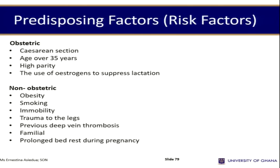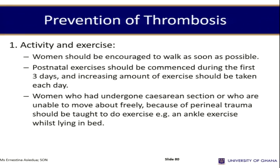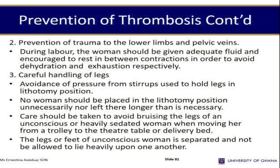Predisposing factors for thrombosis include caesarean section with prolonged immobility, maternal age over 35 years, high parity, and use of estrogen to suppress lactation. Non-obstetric causes include obesity, smoking, immobility, trauma to the legs, previous deep vein thrombosis, family history of thrombosis, and prolonged bed rest during pregnancy. Prevention involves activity and exercise, and avoiding trauma to the lower limbs and pelvic veins.